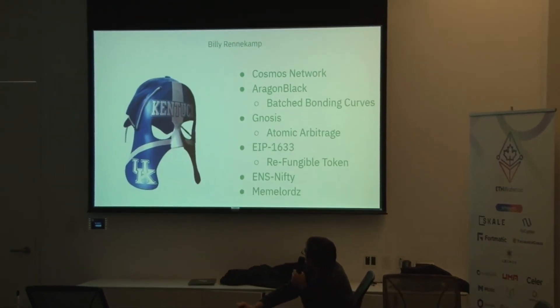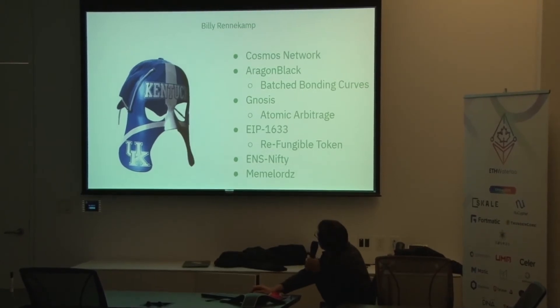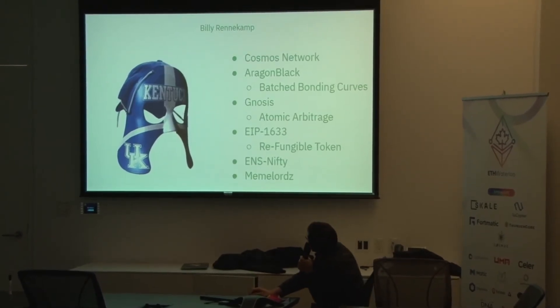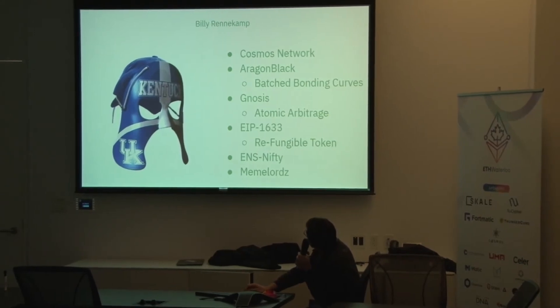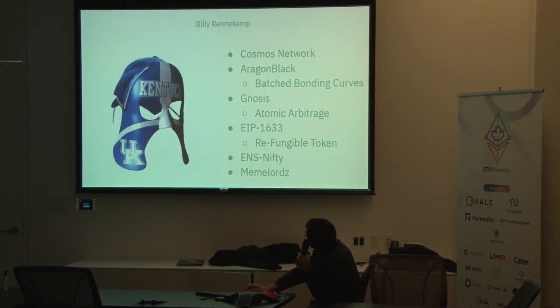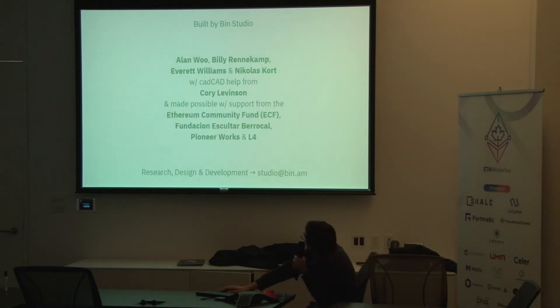First a little bit about myself, my name is Billy. I do a lot of work with Cosmos Network, previously done work with Aragon Black on the implementation of batch bonding curves, with Gnosis doing atomic arbitrage work on their decks. I'm the author of EIP 1633, the Refungible Token, and some fun hackathon projects, ENS Nifty and Meme Lords. Clovers was built by myself and Ben's studio with help from Corey Levinson with CAD CAD. It's been made possible with support from the ECF, Fundacion, Eskaltar, Barakal, Pioneerworks, and L4.